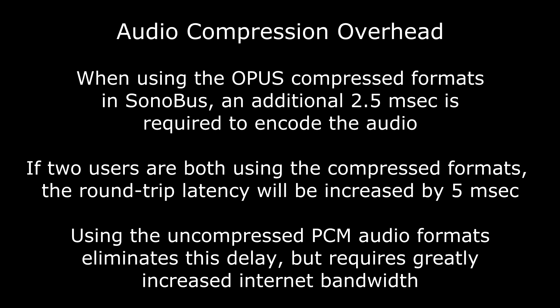If you are sending any of the compressed audio formats, for example 96 kilobits per second, be aware that they add an additional 2.5 milliseconds of delay to do the audio encoding. If two players are both sending compressed format audio, the round-trip delay will be increased by 5 milliseconds. To remedy this, you may choose to send one of the uncompressed formats, for example 16-bit PCM. This eliminates the additional delay required to compress the audio, but at the expense of drastically higher internet bandwidth requirements.